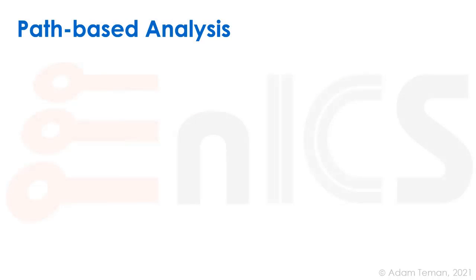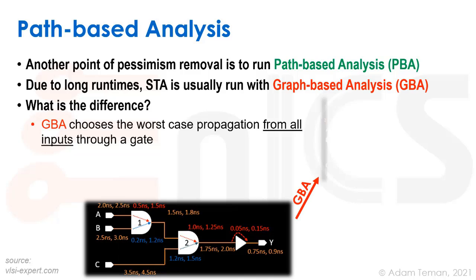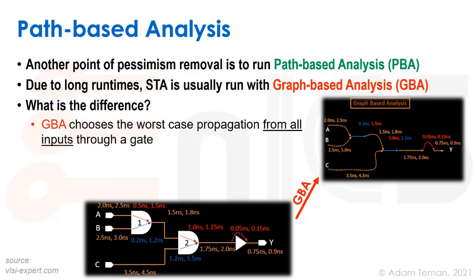Another point, independent of different modeling tools, is path-based versus graph-based analysis. When we discussed STA, we described algorithms that found the RAT and AT to each node on the path. What is actually used in STA is usually called graph-based analysis or GBA, but it provides a lot of pessimism — it takes the worst case. What we should do during sign-off to remove that pessimism is use PBA, or path-based analysis.